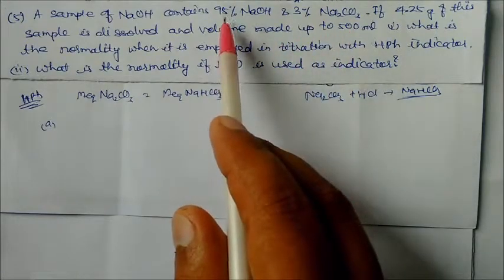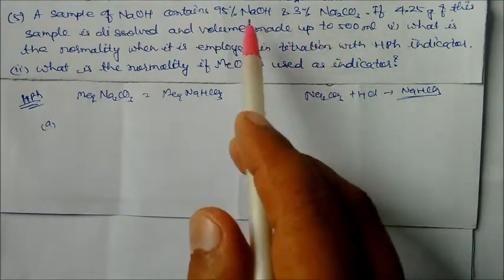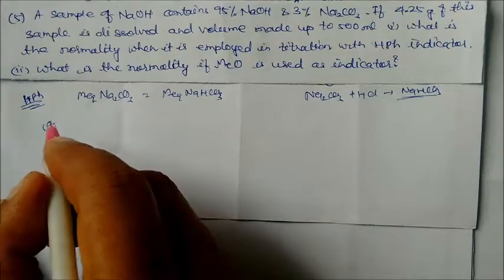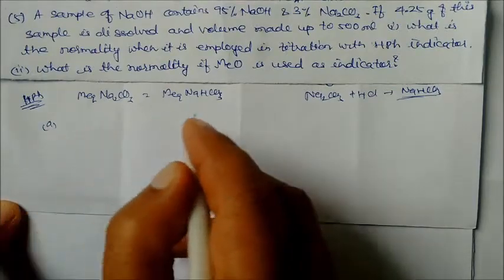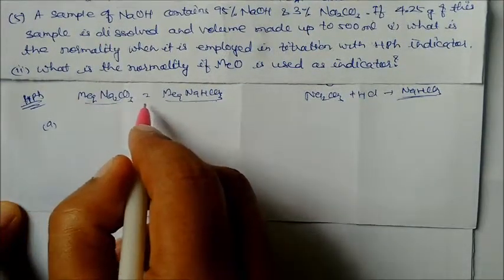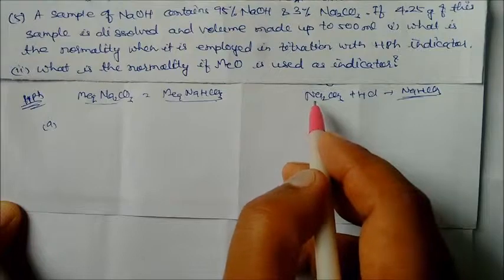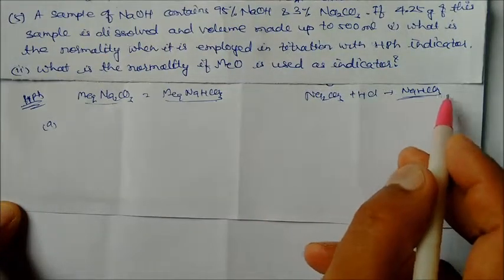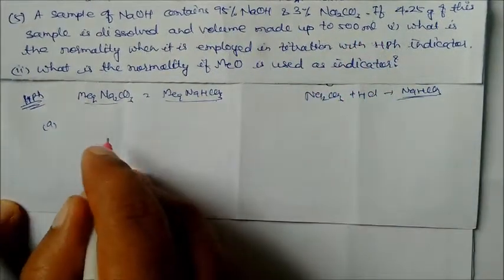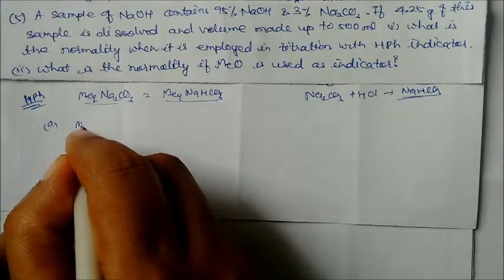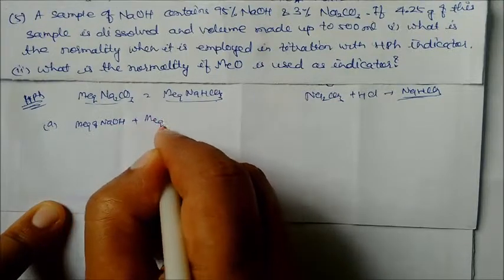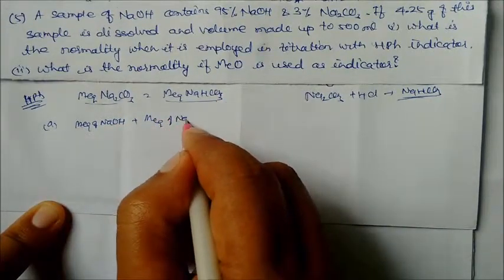Here it is using 95% NaOH and 3% Na₂CO₃ — the total base is used up, and that is the equivalent of the acid. So we have to find the equivalent weight of the base. Both are equal: milliequivalents of sodium carbonate after neutralization with the acid gives milliequivalents of sodium bicarbonate. The volume is 500 ml, and we have to find the milliequivalents of the acid.